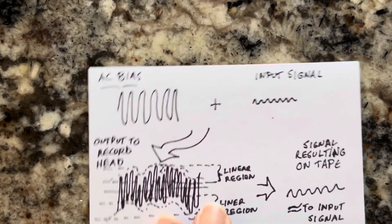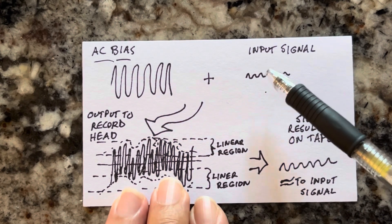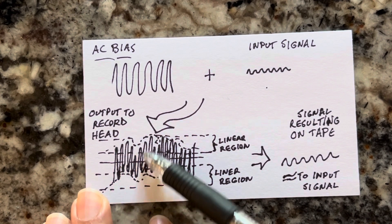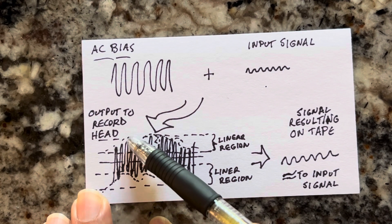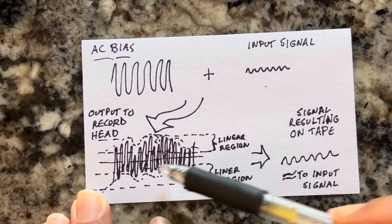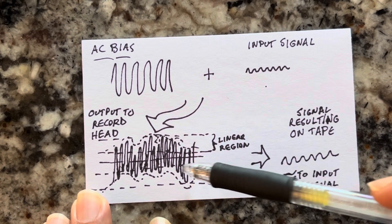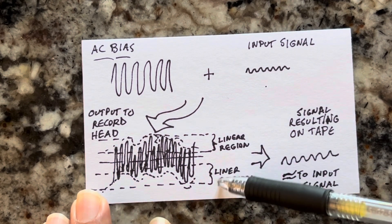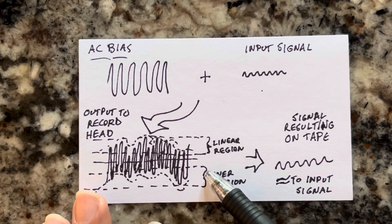The way to implement this: you take your AC bias signal and when you add it passively to whatever input signal you get, you get a very high frequency signal that oscillates according to the input signal. It oscillates and keeps the negative parts and the positive parts of the signal in the two linear regions. That way you get a much more normal response.